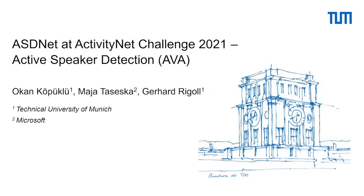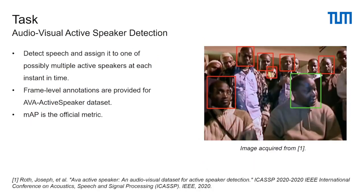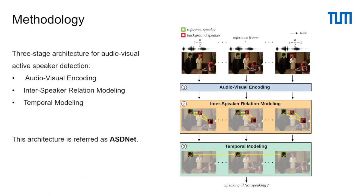Hello everyone. I am Okan Köpüklü from Technical University of Munich. This is the ASDNet submission to the ActivityNet Challenge 2021 for the task of active speaker detection. For this audiovisual task, the speaker needs to be detected and assigned to one of possibly multiple active speakers at each instant in time. We work on the AVA Active Speaker dataset with frame-level annotations, using mean average precision as the official evaluation metric. We propose a three-stage architecture: the initial stage extracts audio and video features for each person; the inter-speaker relation modeling stage captures complementary information from background speakers; and the final stage applies temporal modeling because speaking is a coherent action in time.